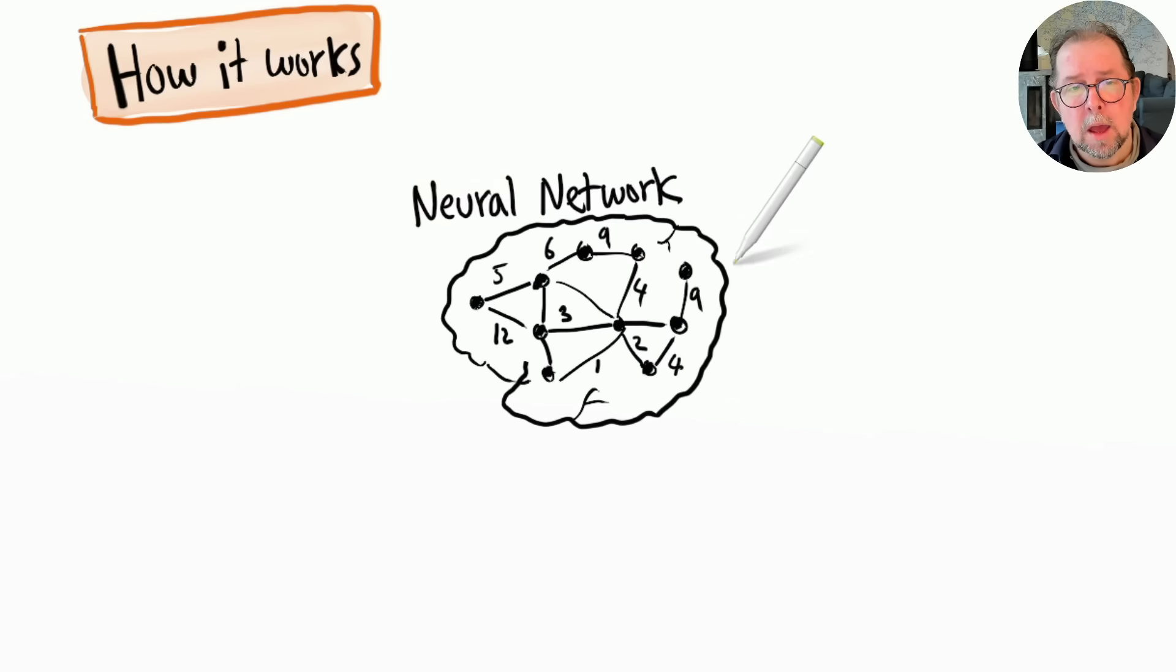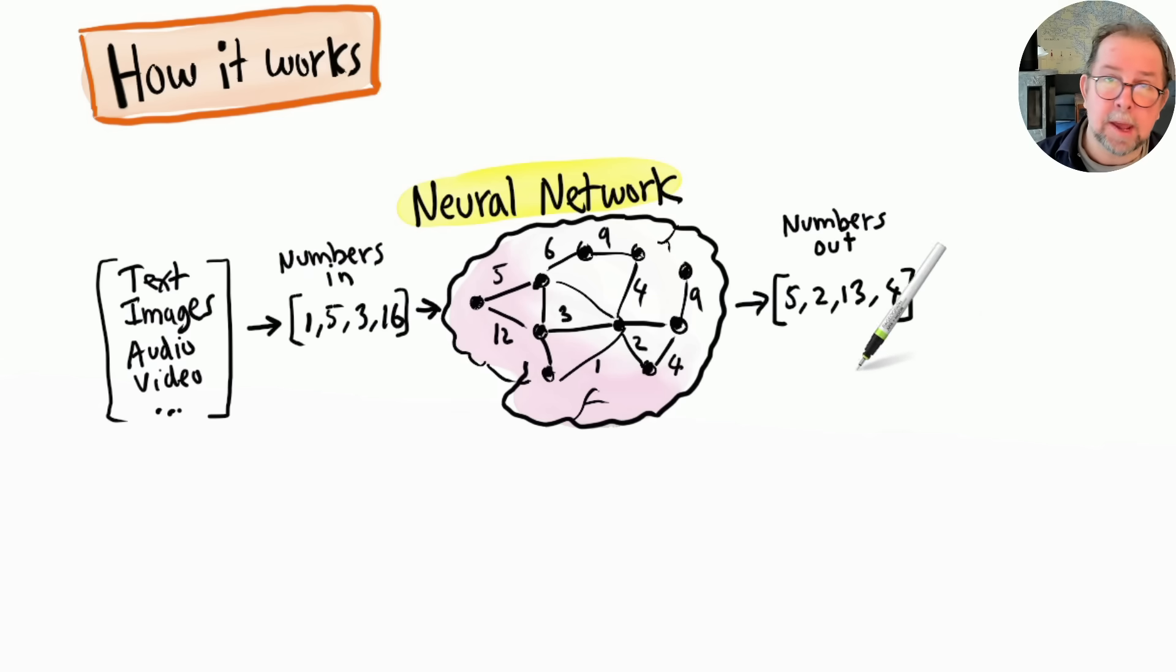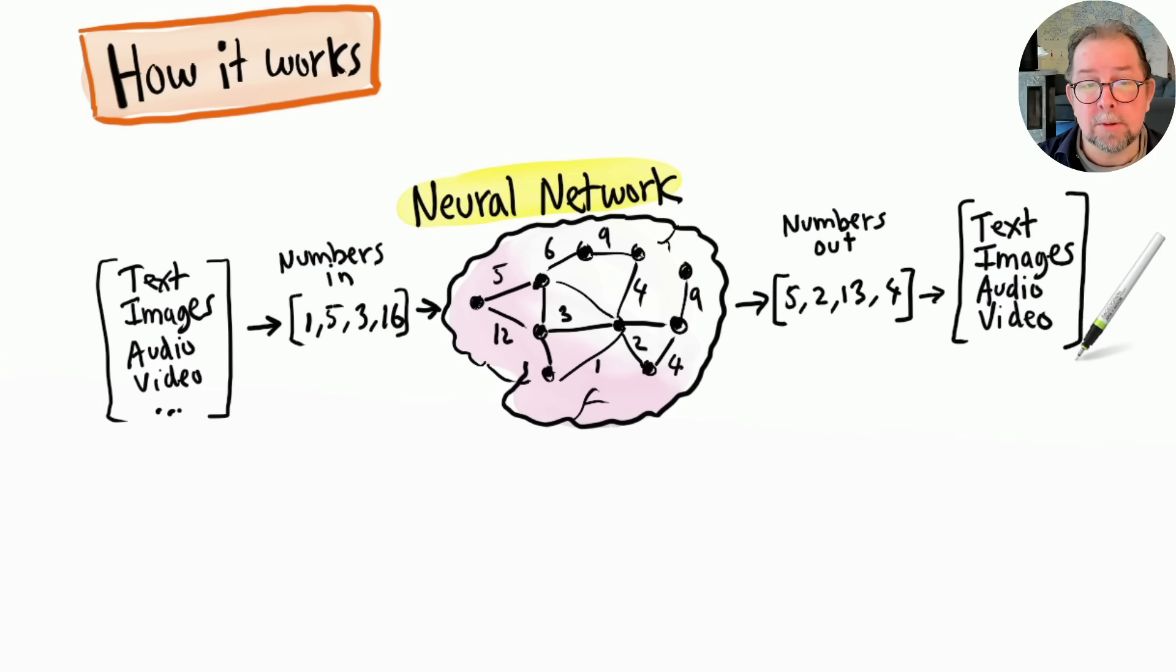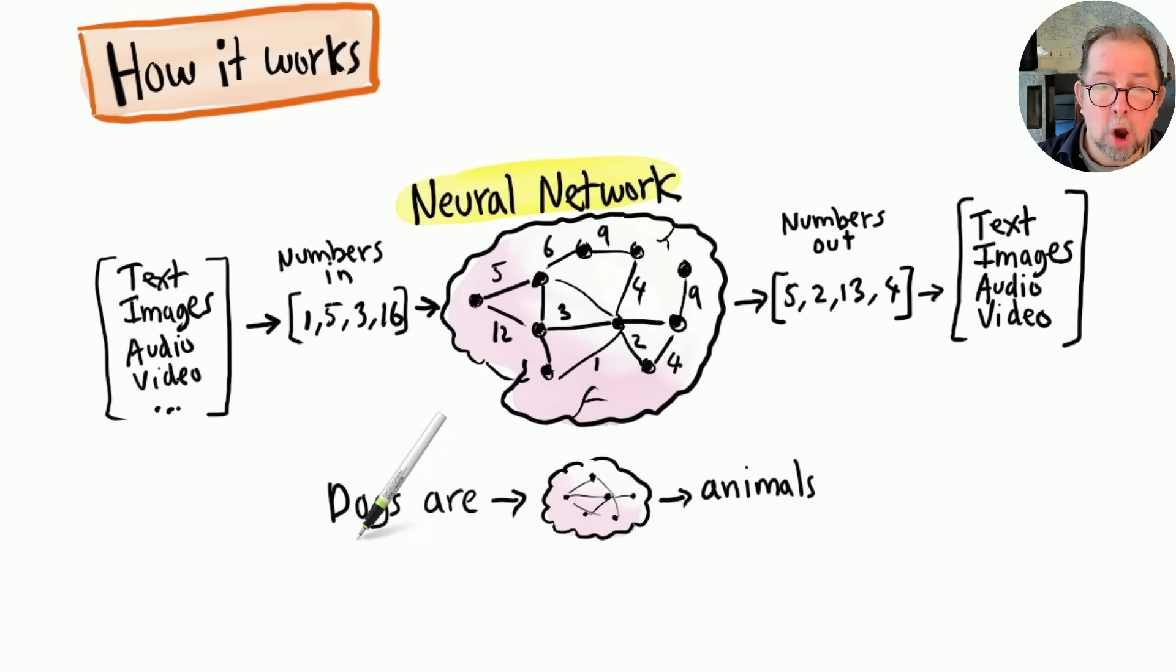Neural networks only deal with numbers. You send in numbers, and depending on how the parameters are set, different numbers come out. But any kind of content, such as text or images, can be represented as numbers. So let's say I write 'dogs are...' When I send that to a large language model, that gets converted to numbers, processed by the neural network, and then the resulting numbers are converted back into text—in this case, the word 'animals.' Dogs are animals.